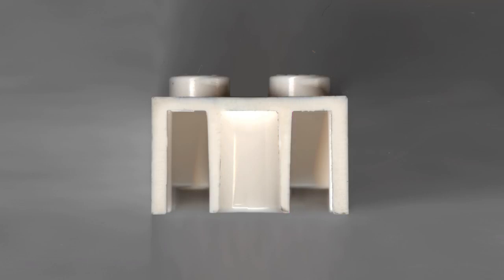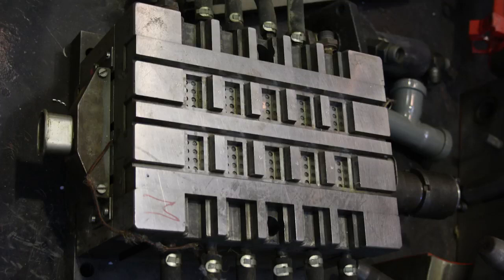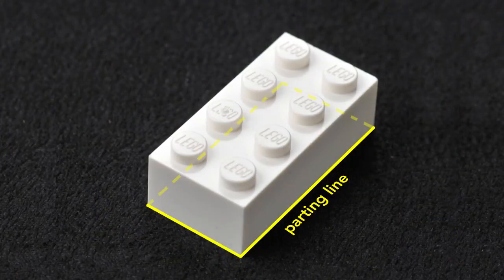The core half and the cavity half of Lego molds are designed so that the parting line is at the bottom edge of the brick. This hides the parting line.